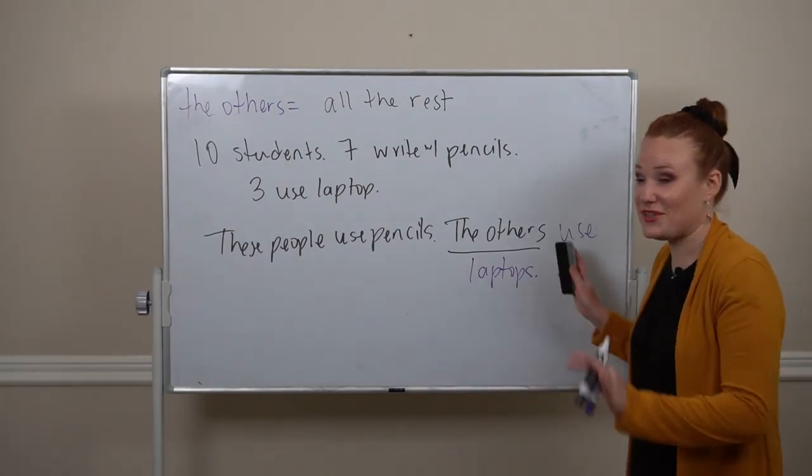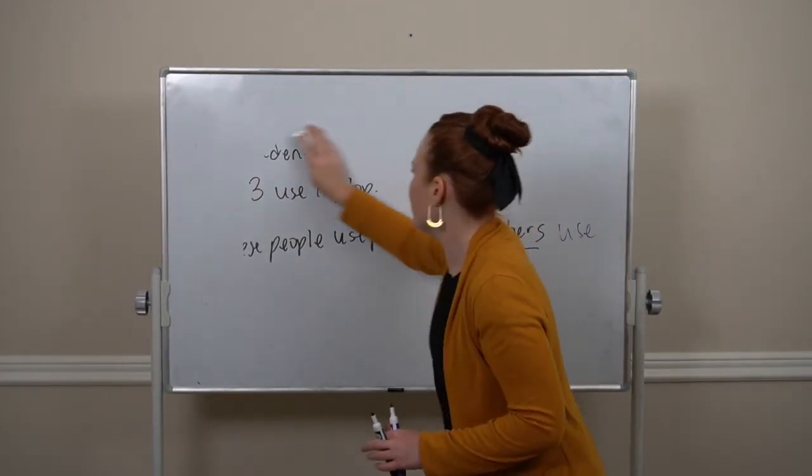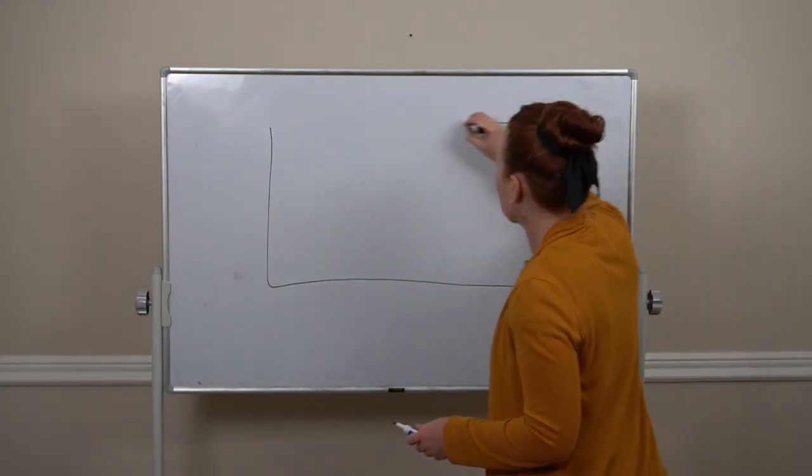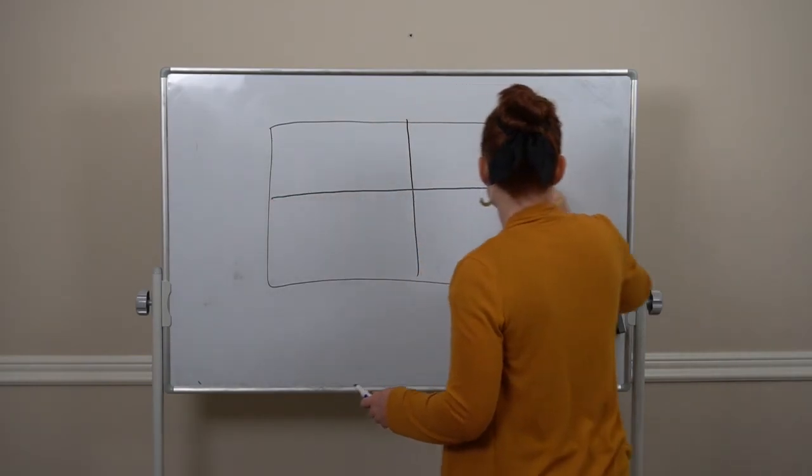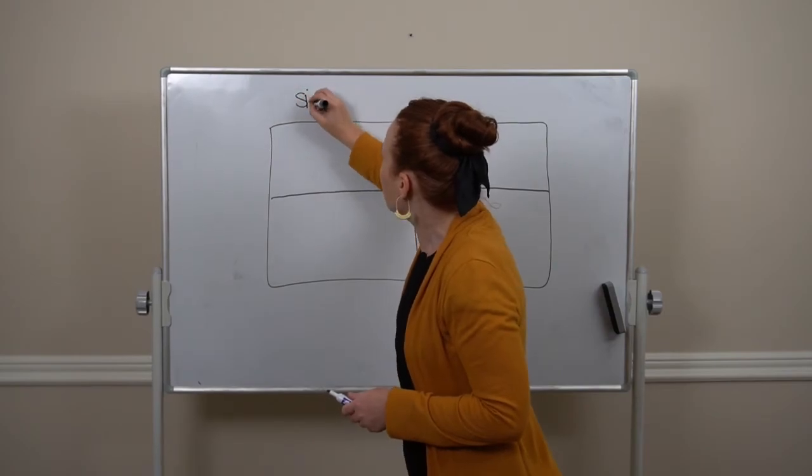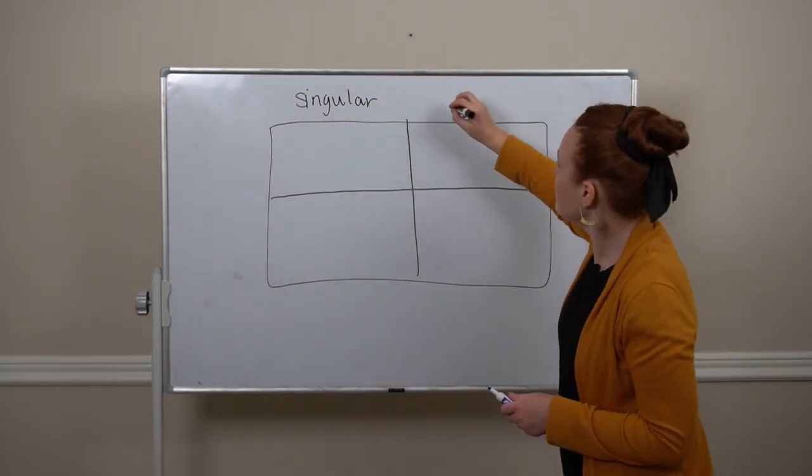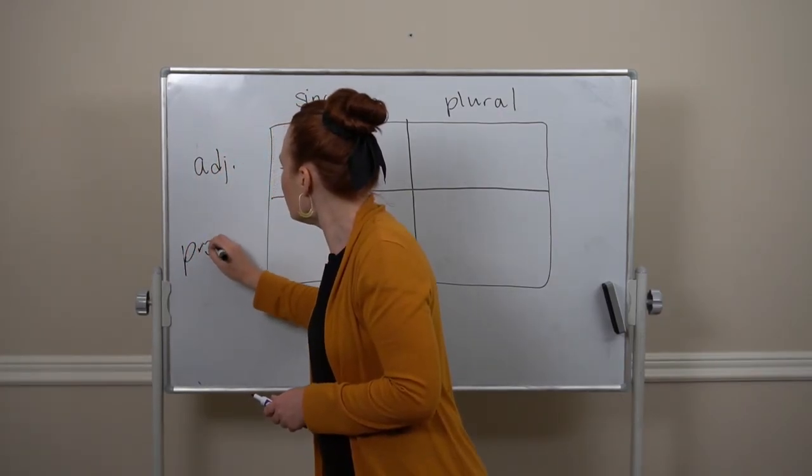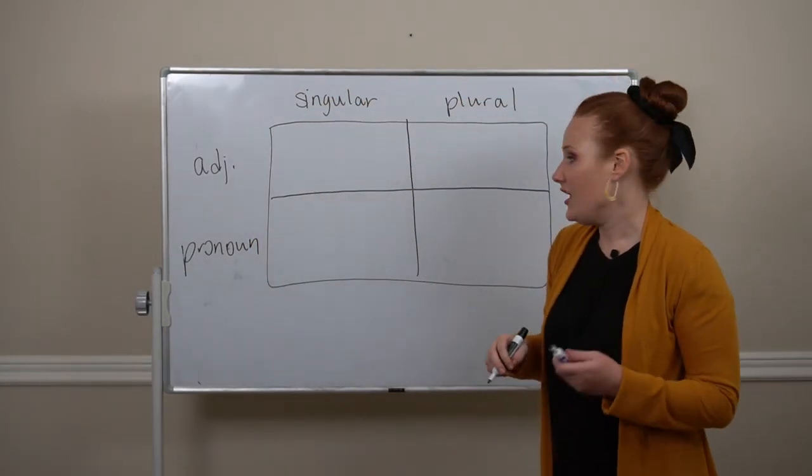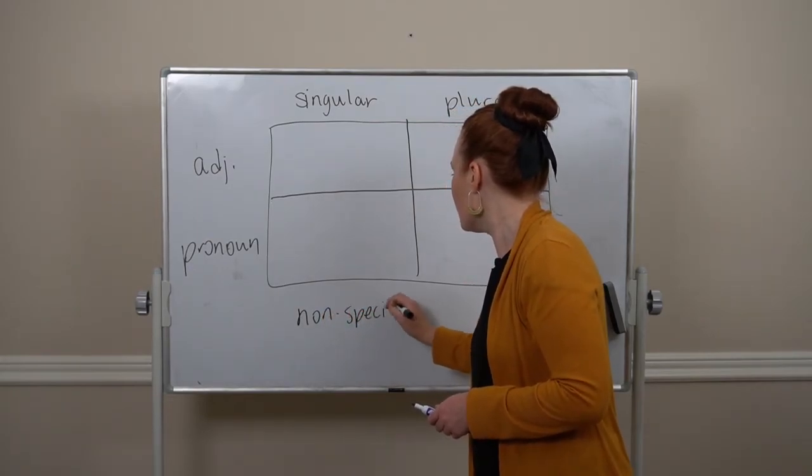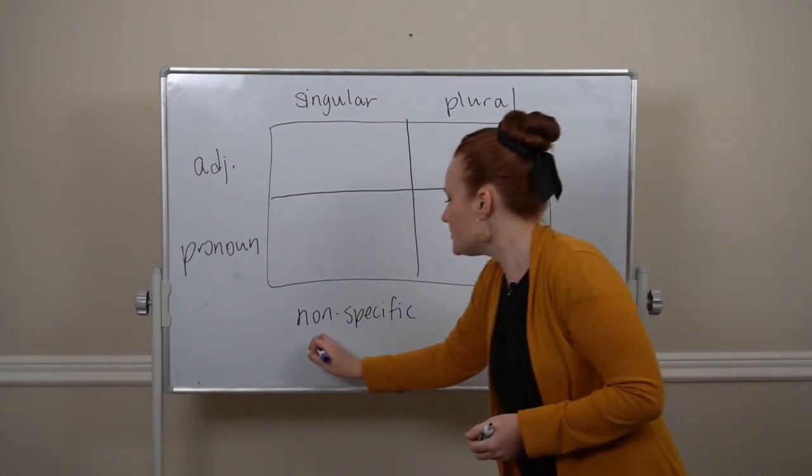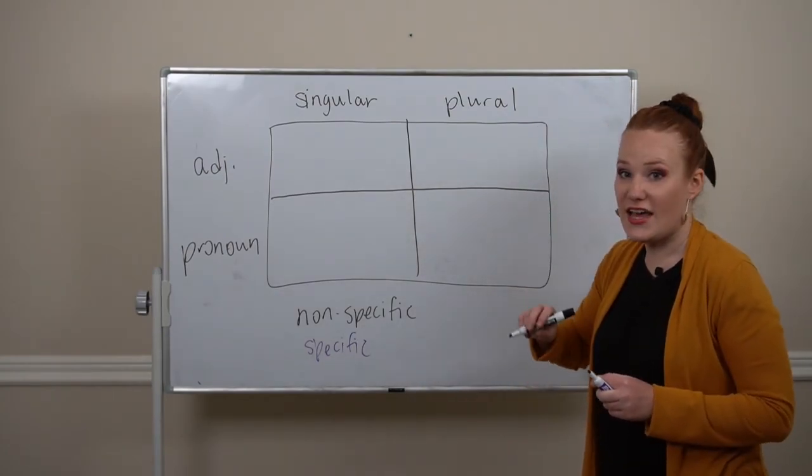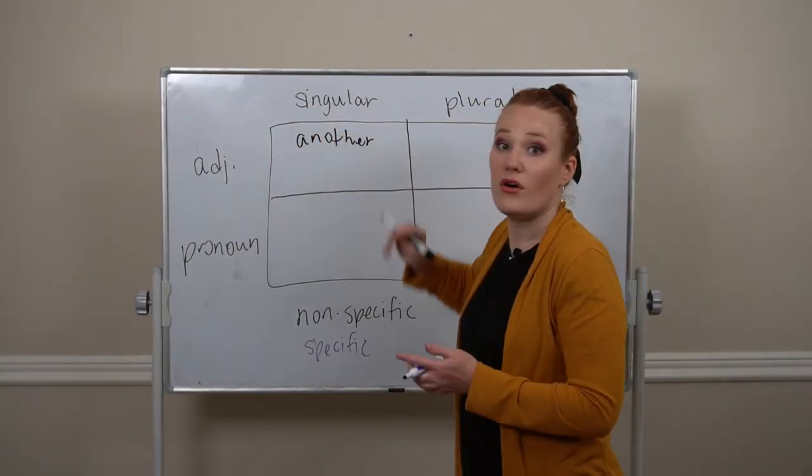All right, I know that's a bit confusing, so I'm gonna put it out in a chart that will hopefully be useful. Making a two-way chart here. I've got singular and plural on the top, adjective and pronoun down the sides. I'm gonna write non-specific words in black and specific ones in purple. So singular and adjective can be another or the other.